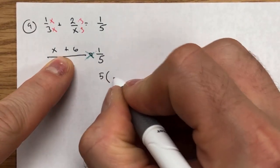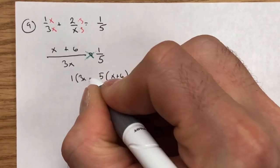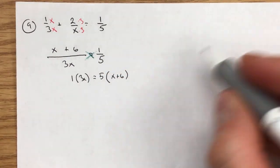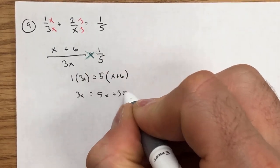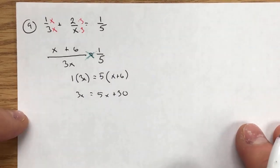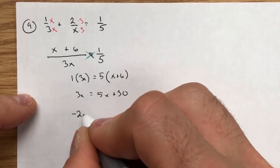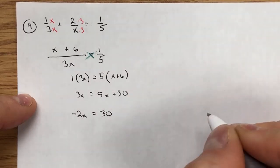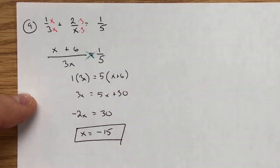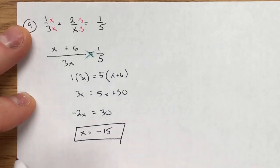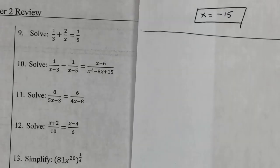Cross multiplying gives us 5 times (x + 6) on one diagonal and 1 times 3x on the other. Setting those equal: 1 times 3x is 3x. Distributing the 5, I get 5x + 30. Moving the x's to the left by subtracting 5x from both sides leaves -2x = 30. Dividing each side by -2, x equals -15.